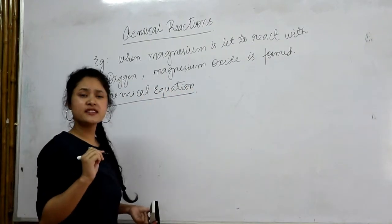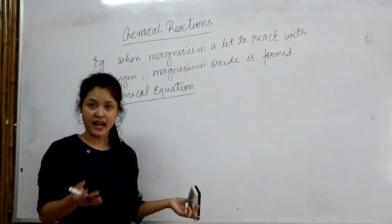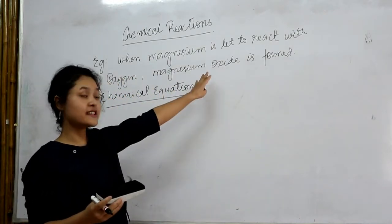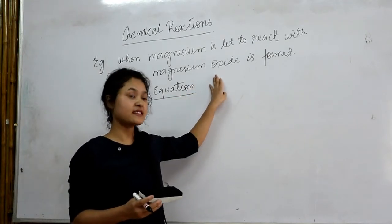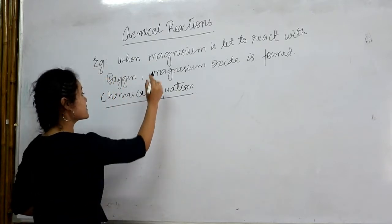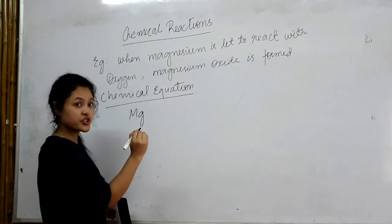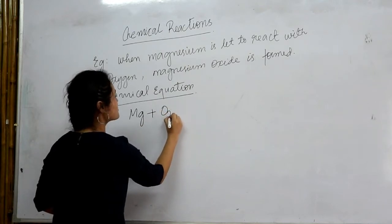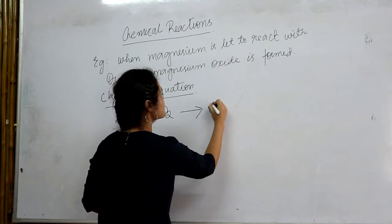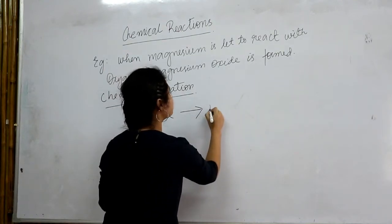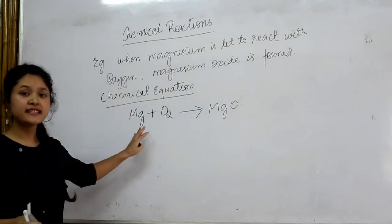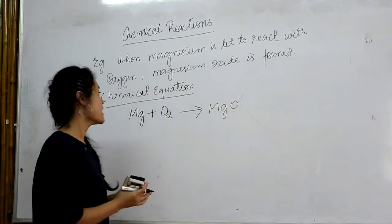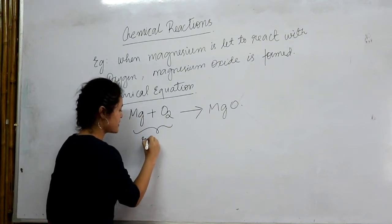A chemical equation is a representation of the chemical reaction using chemical formulas and symbols. For this particular reaction, we write magnesium as Mg, and it is led to react with oxygen, denoted as O2. Magnesium and oxygen are the two substances that take part in the chemical reaction, so they are called the reactants.